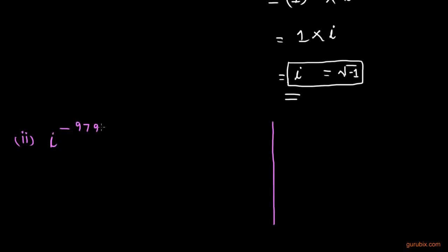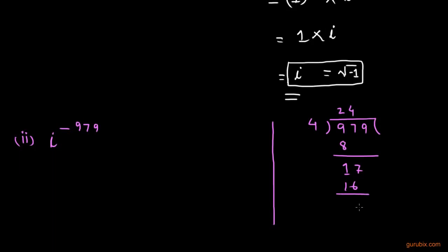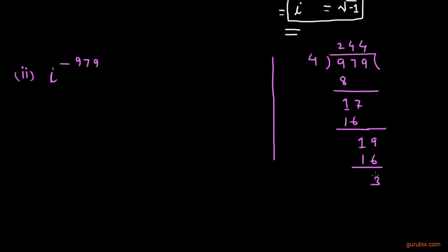First of all, we shall divide 979 by 4. If we divide it by 4, it goes 2 times with a remainder of 1. Bringing down the 7, it goes 4 times 1. Bringing down the 9, it goes 4 times. Finally, the remainder is 3.